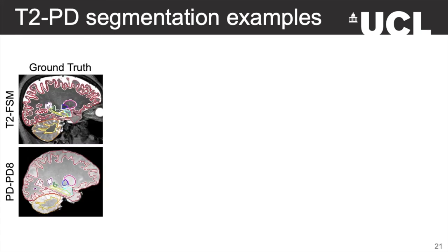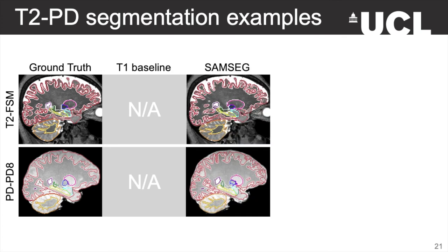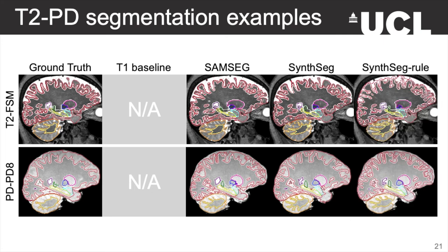We now show results for T2 and proton density scans. These are the ground truth segmentations, and of course the T1 baseline couldn't be applied. Looking at the segmentations obtained by SAMSEG, we see they are still good, but maybe a bit worse than the previous T1 examples. In comparison, SynthSeg produces segmentations of the same quality as before and is now slightly better than SAMSEG. Finally, SynthSeg-rule improved a bit compared to the T1 examples, but it is still clearly outperformed by SynthSeg.